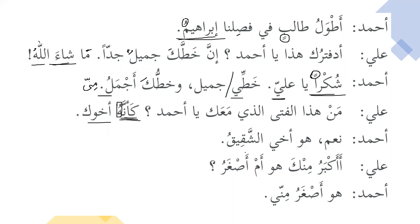Ahmadu: Na'am — yes. Huwa akhiya ash-shakiku — he is my real brother. Ash-shakik means the brother who is your real brother. We say anta akhi — you can be anta akhiya fil-Islam, meaning: innamal mu'minuna ikhwatun — indeed, all the believers are brothers. So we can say you are my brother in Islam. But when you say huwa akhiya ash-shakiku, that means he is my real brother. I have a question.